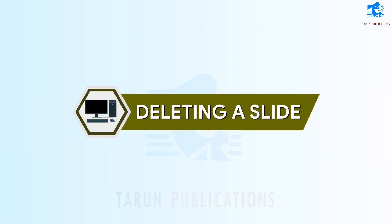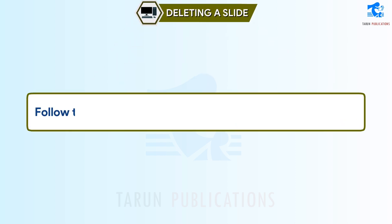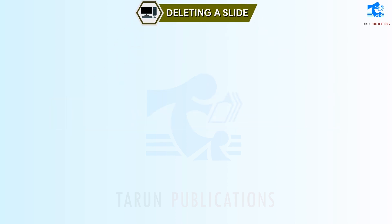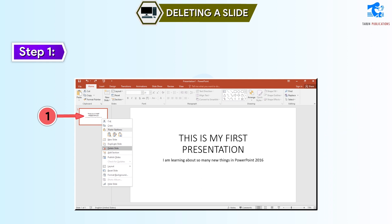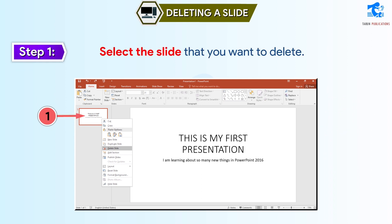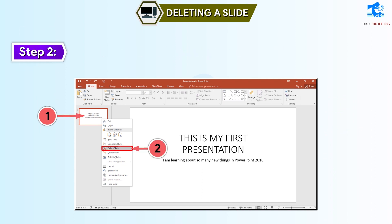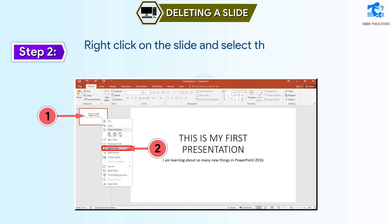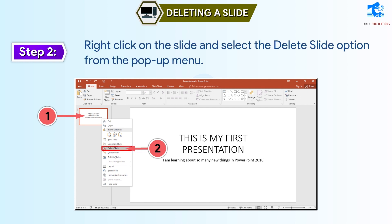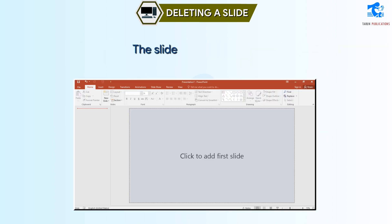Deleting a Slide. Follow these steps to delete a slide. Step 1: Select the slide that you want to delete. Step 2: Right-click on the slide and select the Delete Slide option from the pop-up menu. The slide will get deleted.